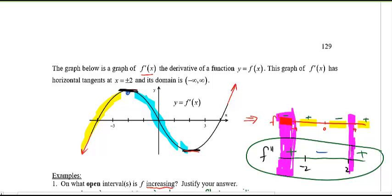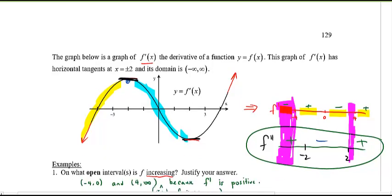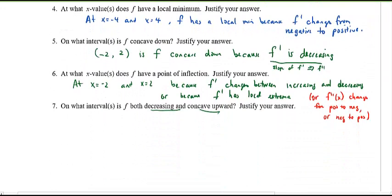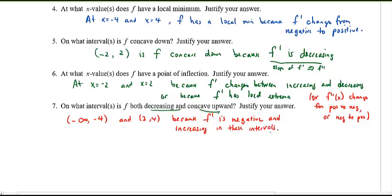So you see how smart where I graphed the second derivative right below the first derivative? There's a reason to my madness. And so finally, you can say something like this, on what intervals from negative infinity to negative four, and also from two to four, because what you can find is that f prime is negative and increasing in that interval. All right.